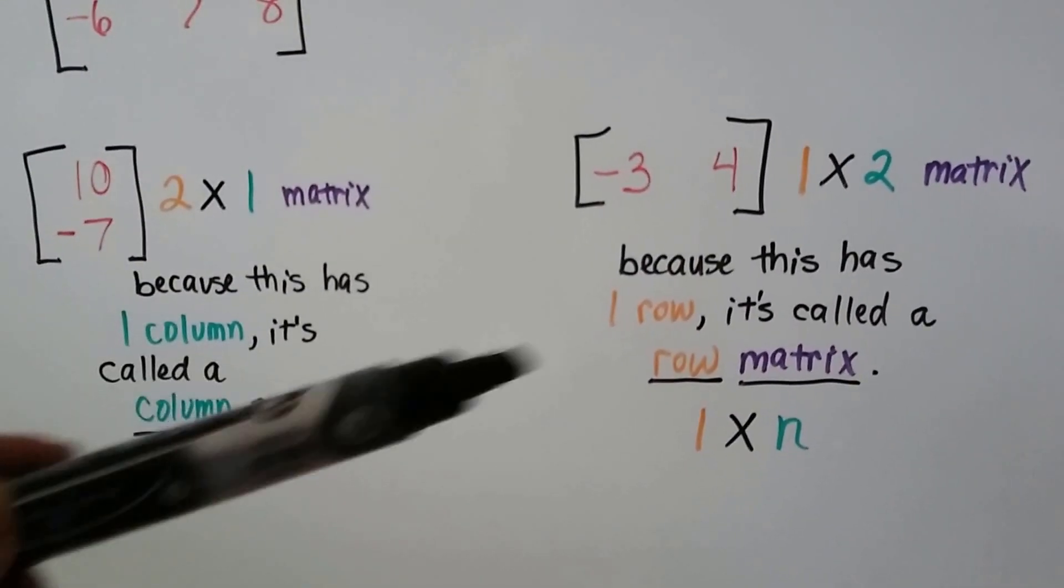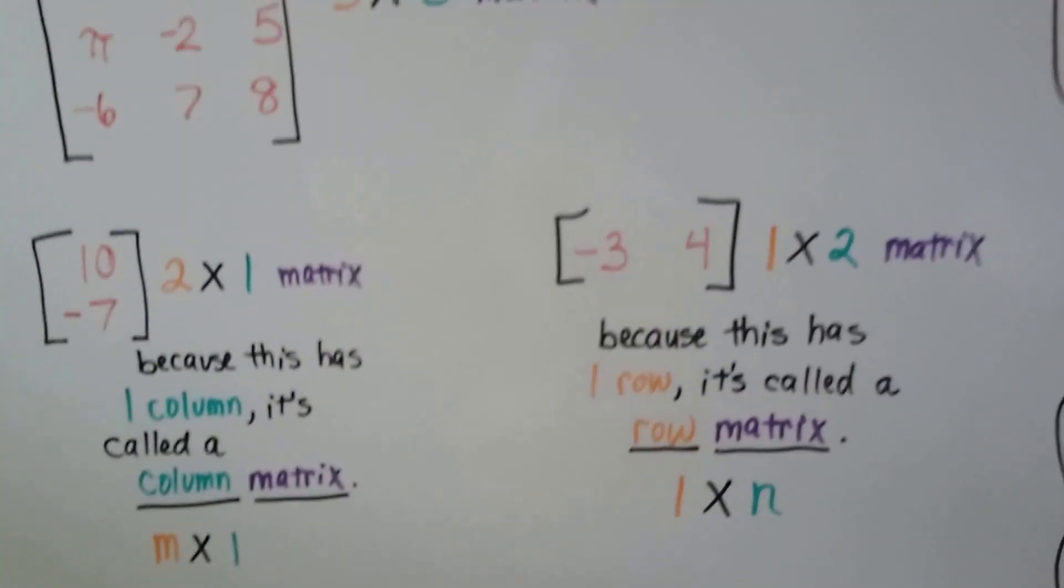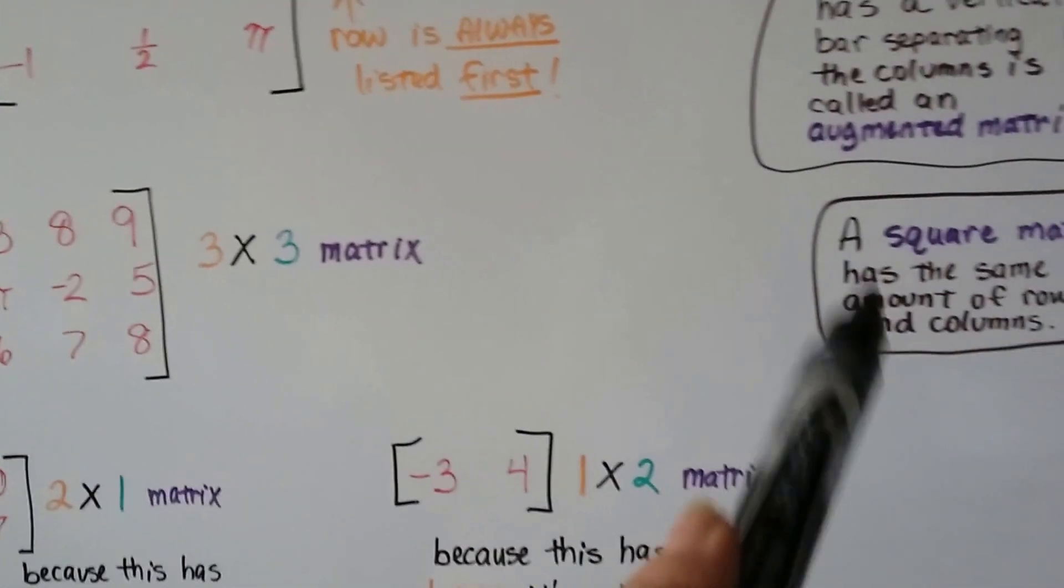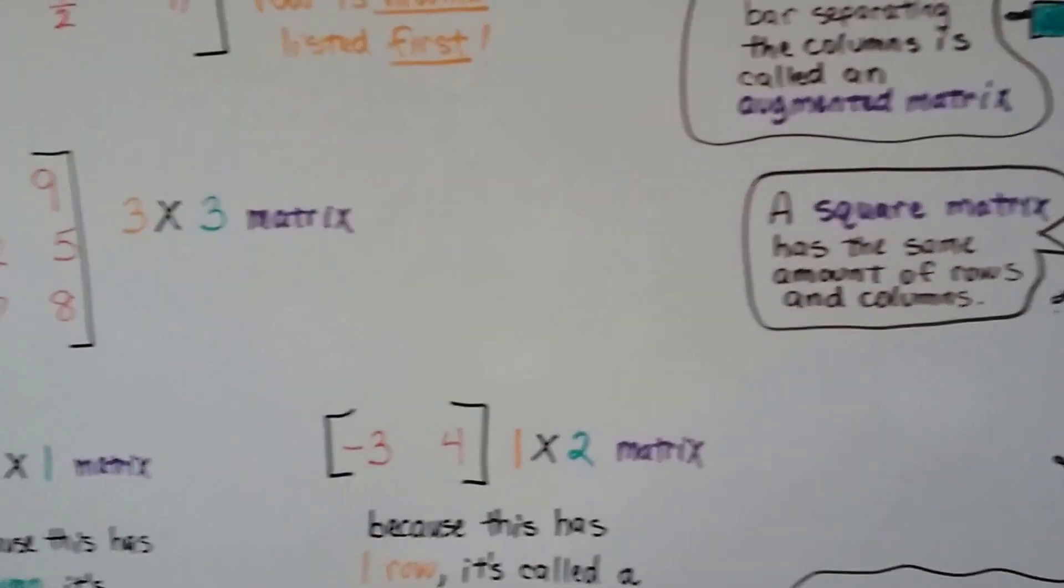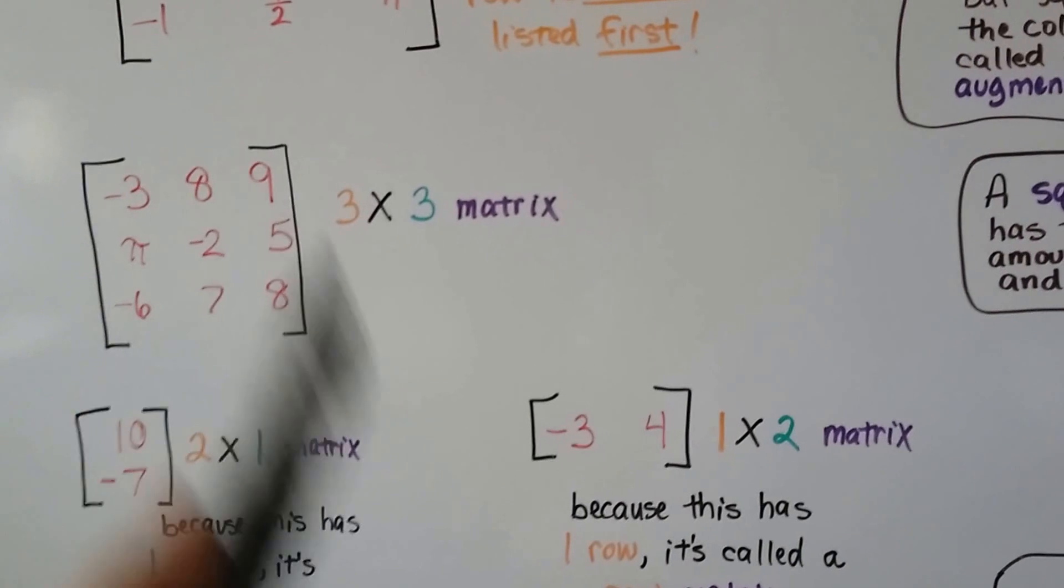1 column is a column matrix, 1 row is a row matrix. A square matrix has the same amount of rows and columns, like this one.